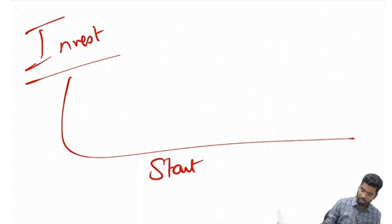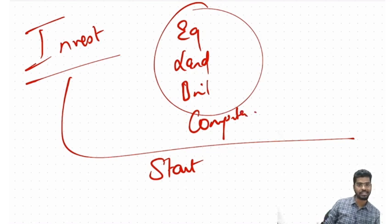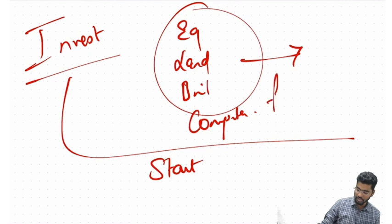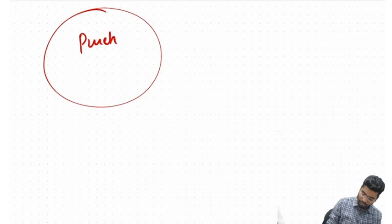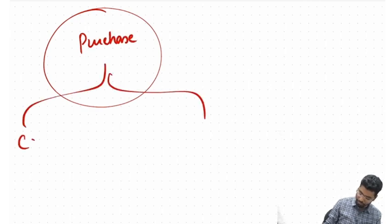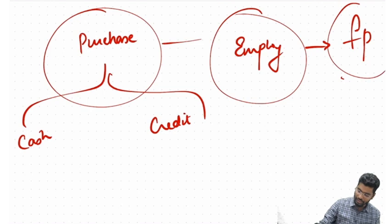Next, what are we going to do with the money? We shall invest the money so that I can start my production. I shall invest in various equipment, land, building, computers, etc. These are the ones which are going to facilitate my production. Once I have money and have set everything up for production, I shall purchase goods — either paying cash or buying on credit.